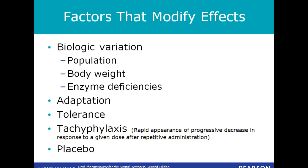Factors that modify drug effects include biologic variation, adaptation, tolerance, and tachyphylaxis, which means the rapid appearance of a progressive decrease in response to a given dose after repetitive administration, and placebo.